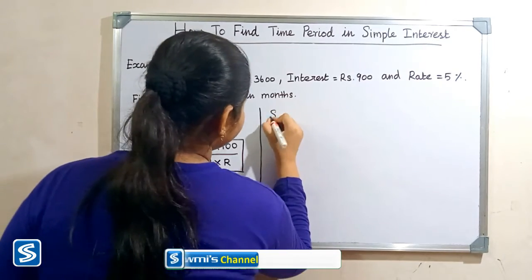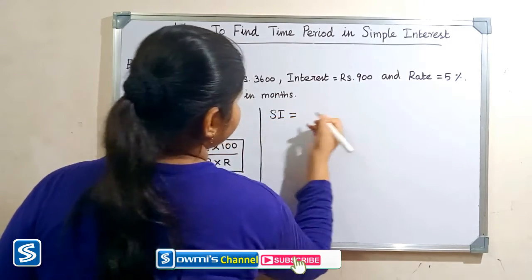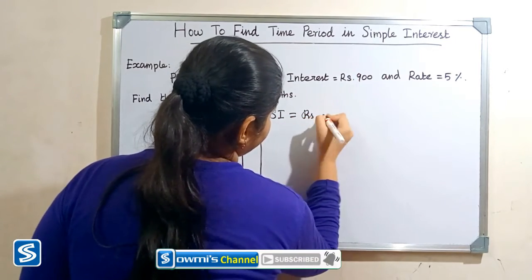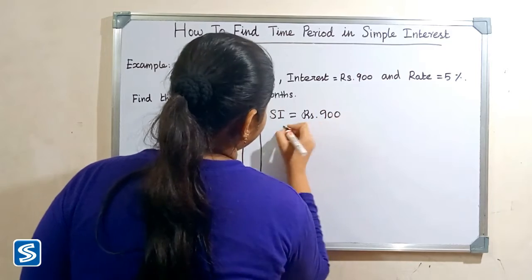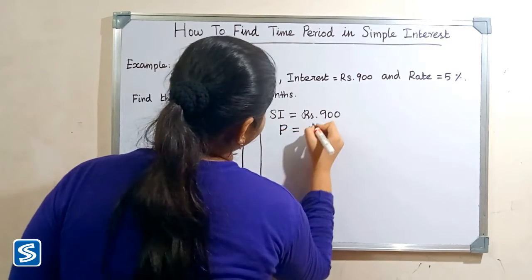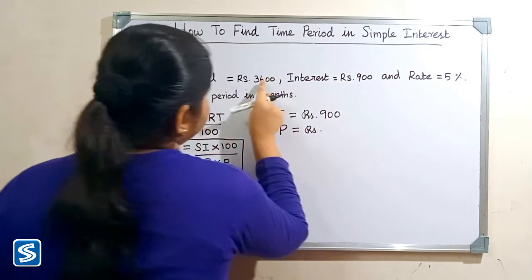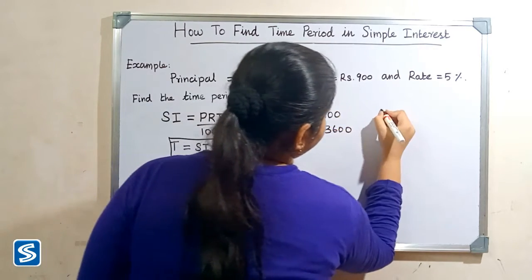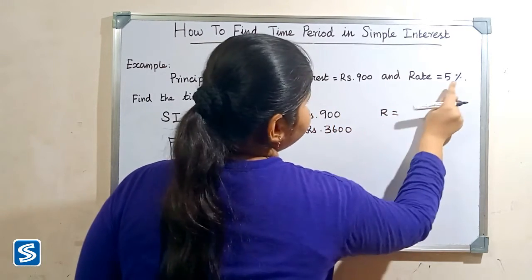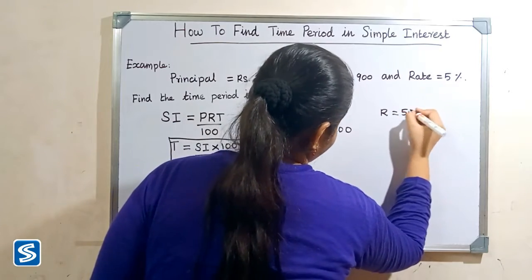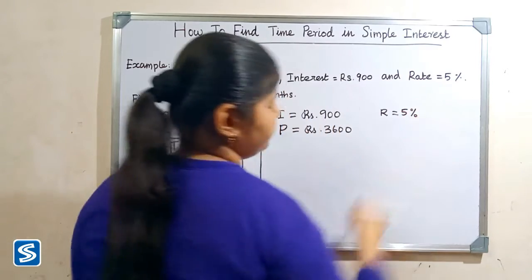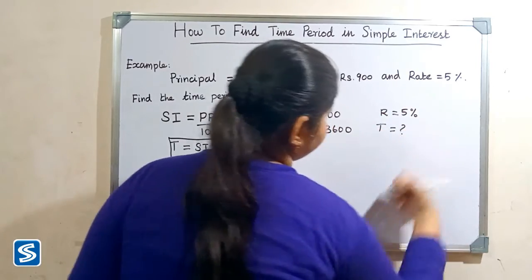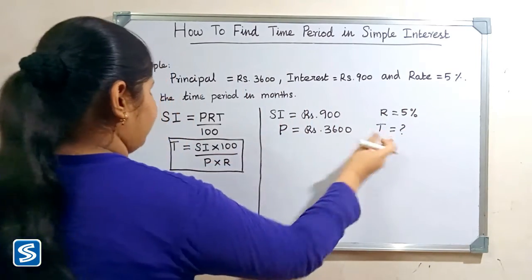Your simple interest is rupees 900, principal amount is rupees 3600, rate of interest is 5 percentage. So now we have to find the time period. Now we will substitute the values in the formula.